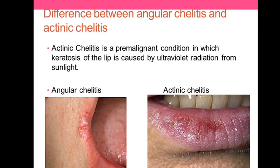Actinic cheilitis normally affects the lips themselves, while angular cheilitis is found at the commissures — the sides of the lips. That is the key difference in site. In terms of cause, angular cheilitis can occur due to complete denture wearing in older patients, or in kids and any age group due to malabsorption or vitamin deficiency.